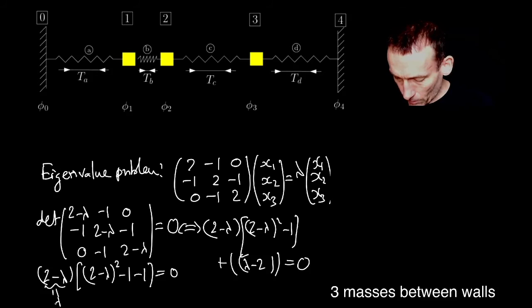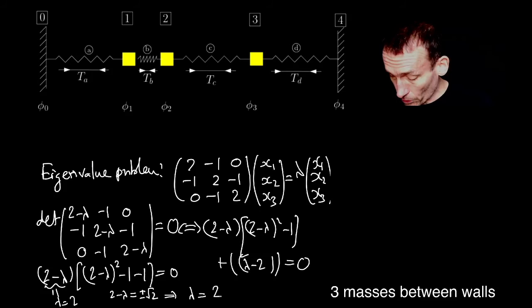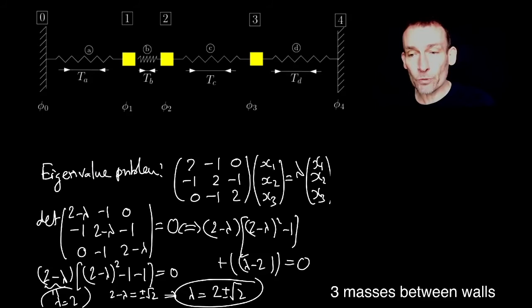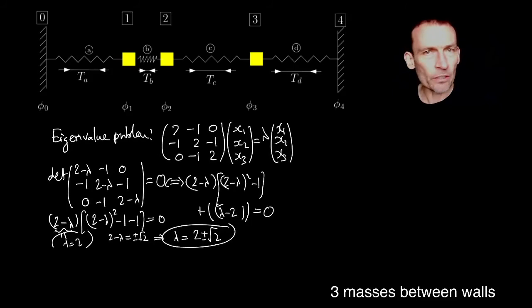Okay, so it looks like my roots are, I can obviously have λ = 2, or I can have 2-λ = ±√2, which is equivalent to λ = 2±√2. Okay, so there, my friends, are my three eigenvalues in this case.